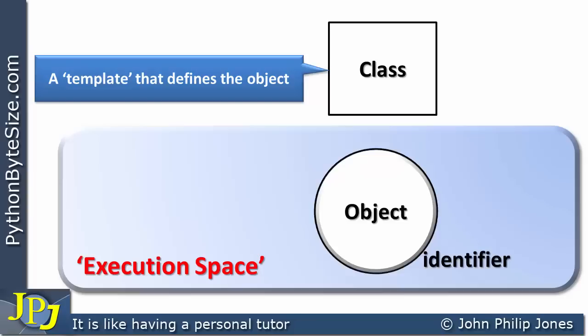The class was just there to help produce the object — we have an instance of the class. As a programmer, we need to know what the class does as a template, because it tells us things about the object. It tells us what behavior the object has and what attributes the object actually has. Let's look at what we mean by object behaviors and object attributes, and realize that they are derived from the class.